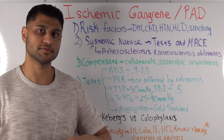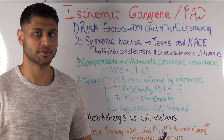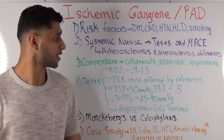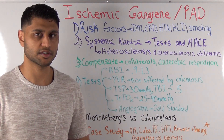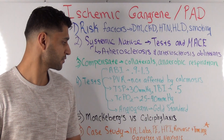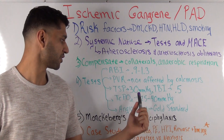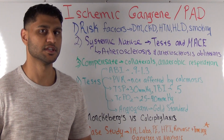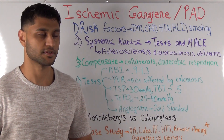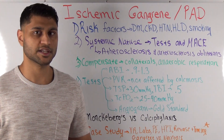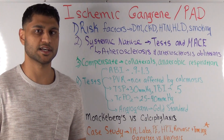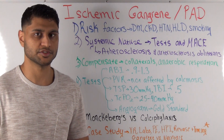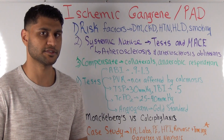Before taking this patient in for a partial first ray amputation, the patient has non-palpable pulses. You order tests: the ABI comes back at 0.7, the toe systolic pressure at 20 with a TBI of 0.35 — this person is vascularly compromised. You get a vascular consult; vascular comes down, sees the patient, and agrees to do a procedure — an angiogram, possibly angioplasty, atherectomy, or whatever they decide is appropriate.